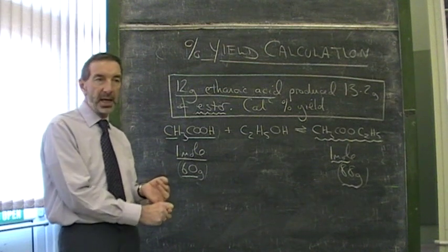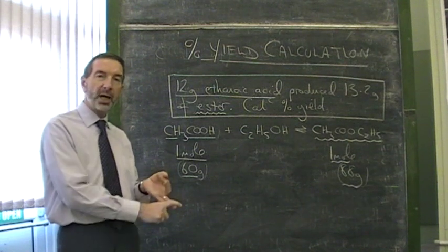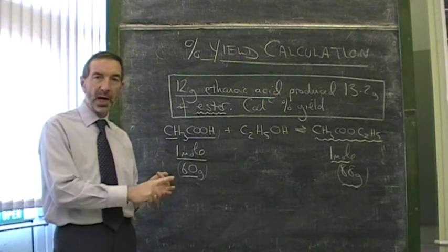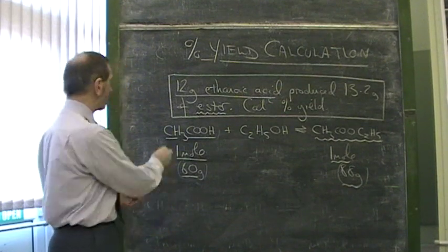It's really a two step calculation. A, how much you should get. B, compare it with what you actually did get. Let's have a look at this calculation here.